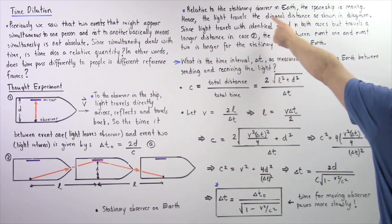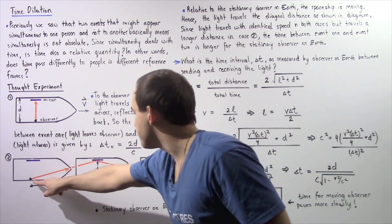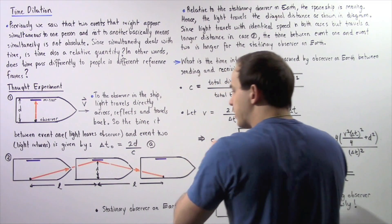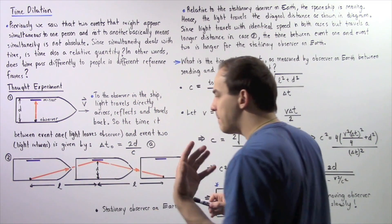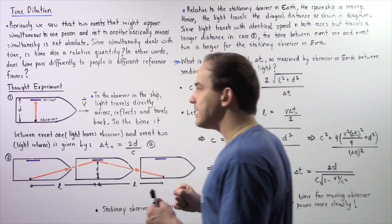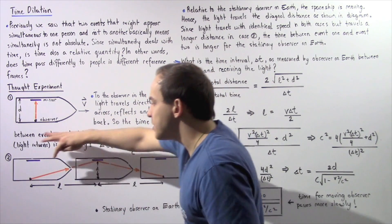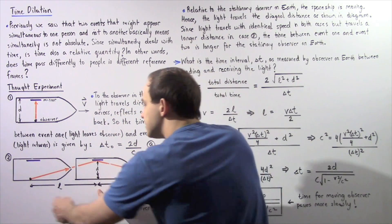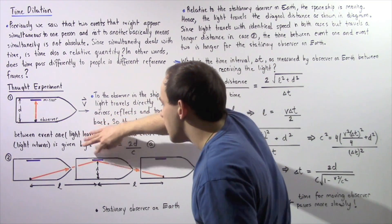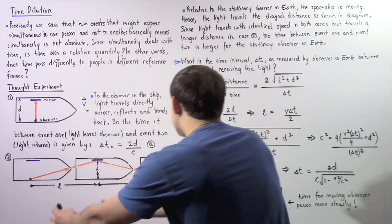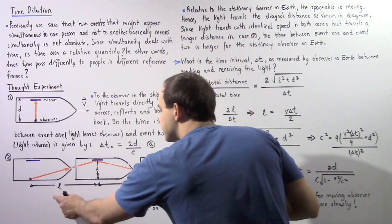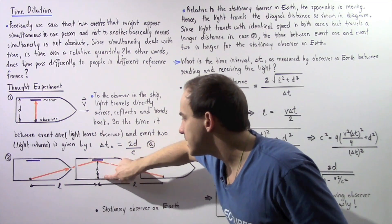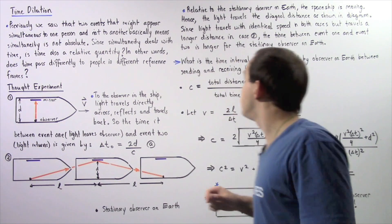Therefore, the light travels a diagonal distance as shown in the diagram. As our person is observing, the spaceship moves between three positions and the ray of light also moves. When the person inside the spaceship creates that ray of light, by the time it reaches the mirror, the spaceship has traveled a distance L. When the ray of light bounces back and reflects, the spaceship has traveled another distance L. These two distances are the same because V is constant, and the distance between the observer and the mirror is again given by D.